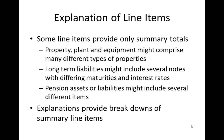The second category is the Explanation of line items. Some line items provide only summary totals. For example, you only get one line item for property, plant, and equipment, but you want to know the cost of each item and the accumulated depreciation of each item to estimate the age and approximate condition. With long-term liabilities, you only get one line item — you don't know whether it's due in two years or twenty years. There may be notes, there may be bonds with different interest and principal payment contracts, and pension assets or liabilities might include several different items. So you provide a breakdown of the summary line items.